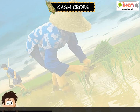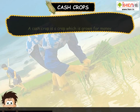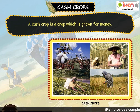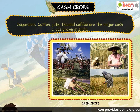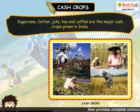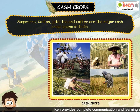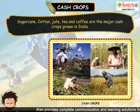Cash crops in India: A cash crop is a crop which is grown for money. Sugarcane, cotton, jute, tea and coffee are the major cash crops grown in India.